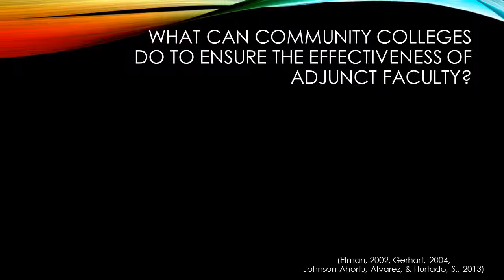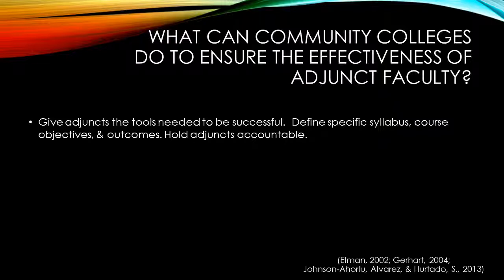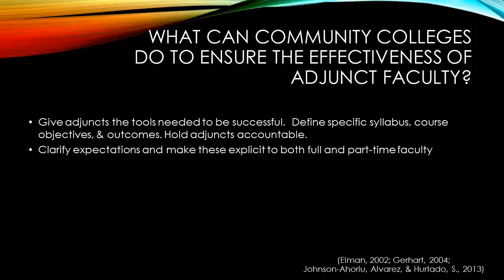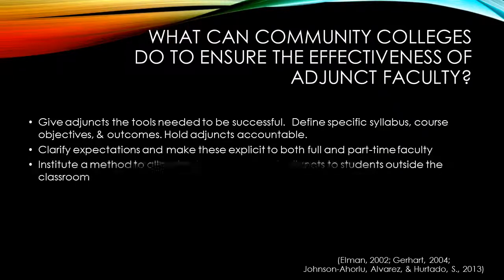Community colleges must look at what they can do to ensure the effectiveness of their adjunct faculty. Adjuncts must be given the tools they need to be successful, such as a defined syllabus, course objectives, and outcomes, and should be held accountable for adhering to these — perhaps by signing a contract to follow course specifics. Expectations should be clarified and made explicit to both full- and part-time faculty. Institutions could establish a program to train adjuncts and full-time faculty to understand the classroom environment and learning styles. Adjuncts should teach because they like to teach and because they can teach, not just to earn a paycheck.